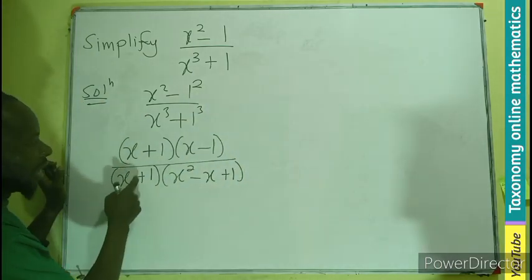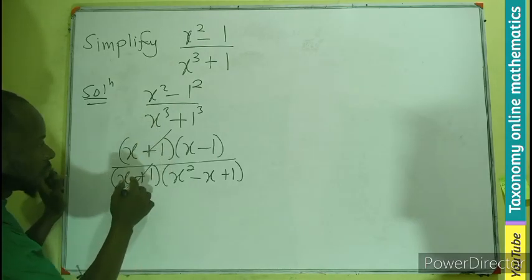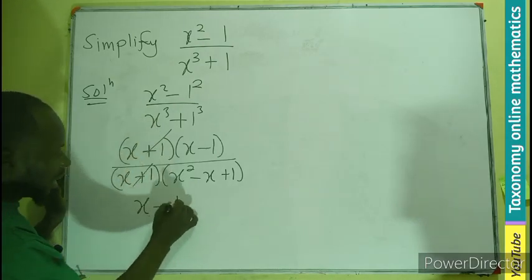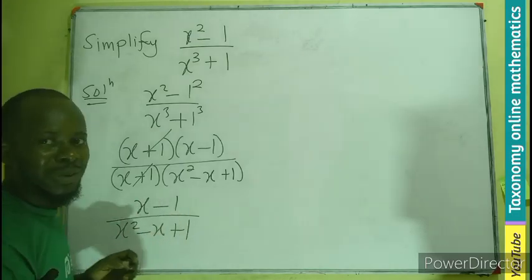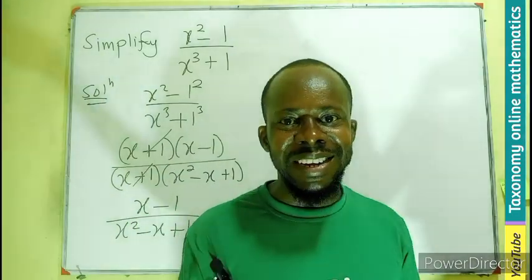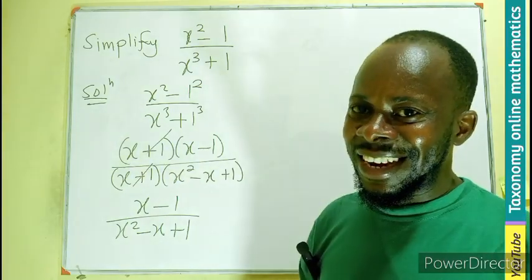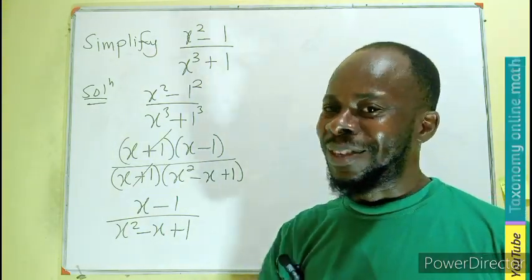And I believe you can see in the numerator, this will cancel out. So we are left with only x minus 1 divided by x squared minus x plus 1. So that is what you are looking for, to simplify this. I believe you get it. Like, share and comment. Bye bye.